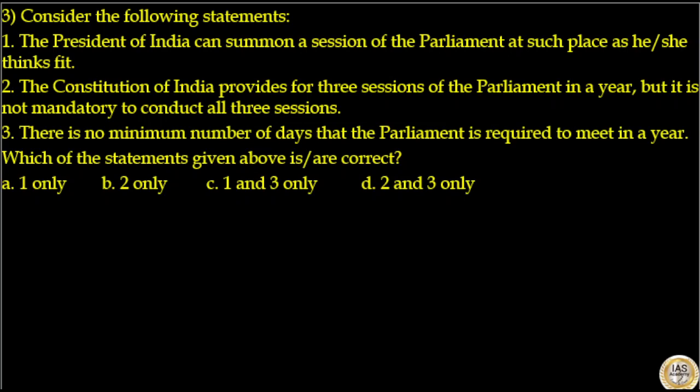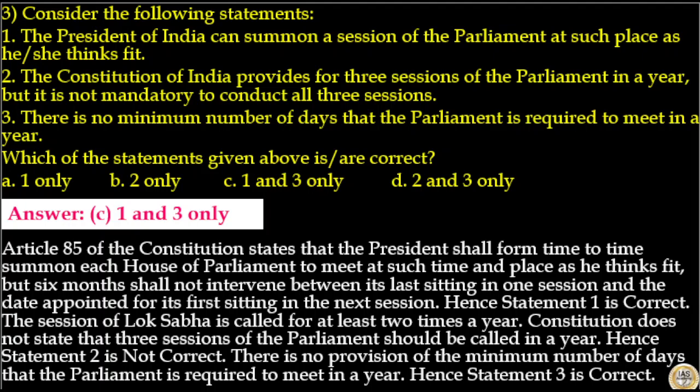The answer to this question is option C — statements 1 and 3 are correct. Article 85 of the Constitution states that the President shall from time to time summon each House of Parliament to meet at such time and place as he thinks fit, but 6 months shall not intervene between its last sitting in one session and the date appointed for its first sitting in the next session. Hence statement 1 is correct. The Constitution does not state that 3 sessions of Parliament should be called in a year — hence statement 2 is not correct. There is no provision for a minimum number of days that Parliament is required to meet in a year — hence statement 3 is correct. The answer is option C.